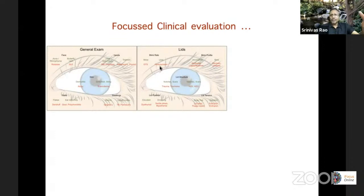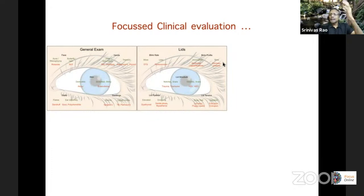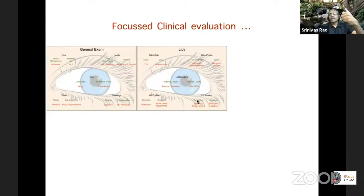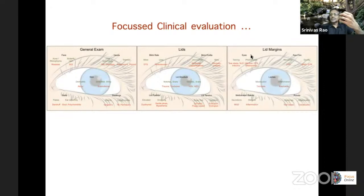When you look at the lids, look at the blink rate — if it's more, you think about dry eye; if very poor, Parkinsonism. Look at the blink profile: it could be incomplete, suggesting nocturnal lagophthalmos. A very slow blink could be because of dermatochalasis — the patient is scared to close because it takes a lot of effort to open. Look at the lid structure for notching or scarring from trauma or trachoma, vesicles or scars from past herpetic infection suggesting neurotrophic change. Look at the lid position — elevated as in thyroid disease with lid stare, or drooping due to senile ptosis or myasthenia. Check lid tension: when you pull it and let go, is it snapping back, or very lax suggesting lid eversion, punctal eversion, or floppy eyelid? Also look for entropion and ectropion.